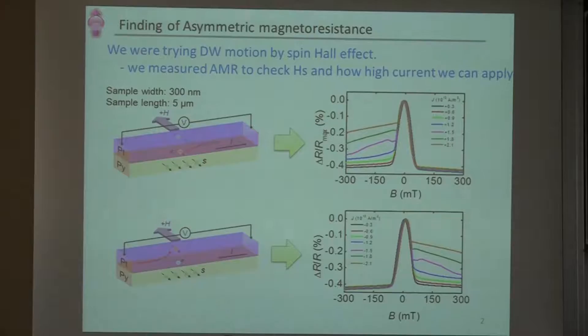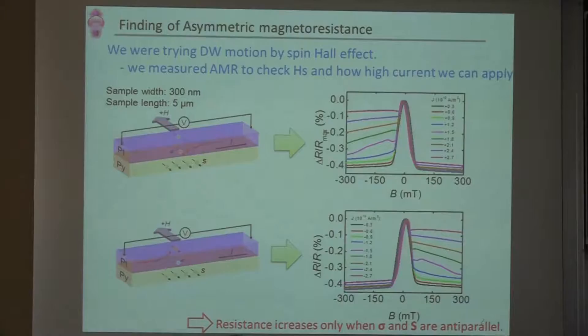Here we have a conventional AMR curve. But if you increase the current, then you see the difference between these baselines, and it increases with increasing current. Here you see this baseline is now asymmetric. This resistance change occurs only when the injected spin is anti-parallel to the magnetization. So we define this change in the baseline as asymmetric MR.